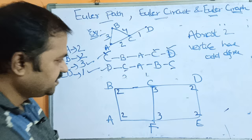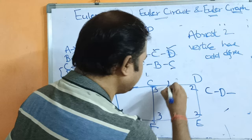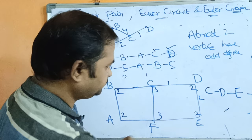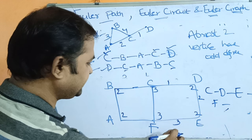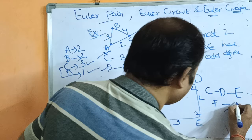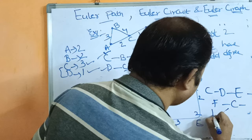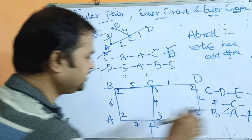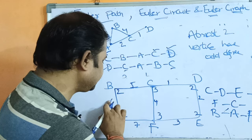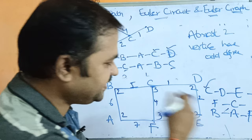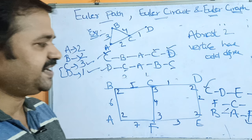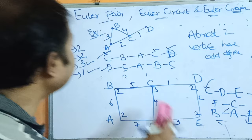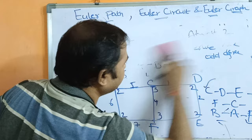Let us find the Euler path. Start from C: go C to D (first edge), D to E (second edge), E to F (third edge), F to C (fourth edge), C to B (fifth edge), B to A (sixth edge), A to F (seventh edge). All seven edges are visited exactly once. The path starts at vertex C and ends at vertex F — the starting and ending vertices are different. So this graph contains Euler path.